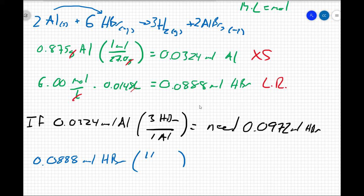There is 1 AlBr3 for every 3 HBr. So that means I am going to make 0.0296 moles of aluminum bromide.